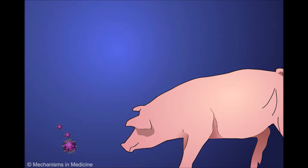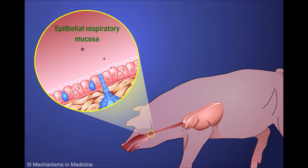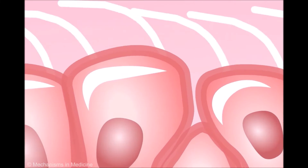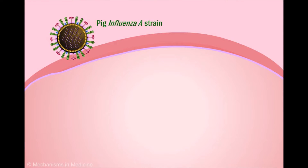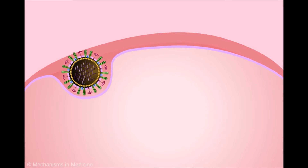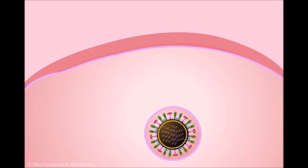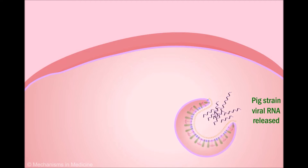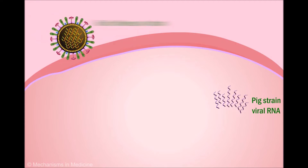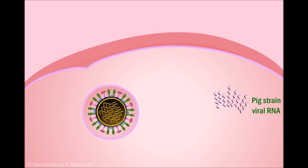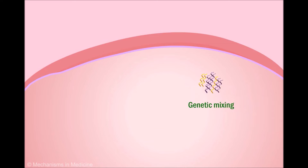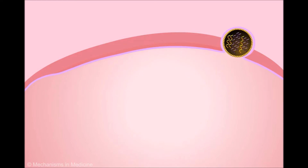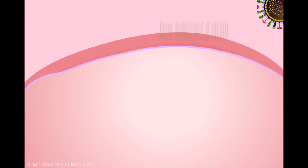Influenza sets up local upper respiratory tract infections in pigs through a process of antigenic shift. The virus targets and infects epithelial respiratory mucosa cells. Hybrid viruses are created when different strains infect the same cell. First, the native pig strain of influenza A targets the epithelial cell, binds, and enters through endocytosis, releasing its viral genome into the cytoplasm. Then a bird strain of influenza A infects the same cell and mixes with the pig strain gene segments. These mixed viral gene segments re-assort into a new influenza A virus strain, which may further spread to the human population.